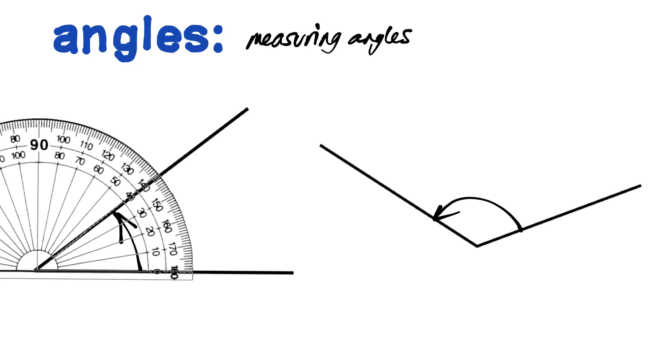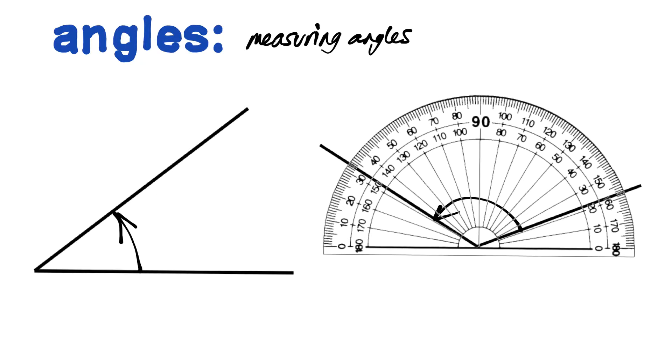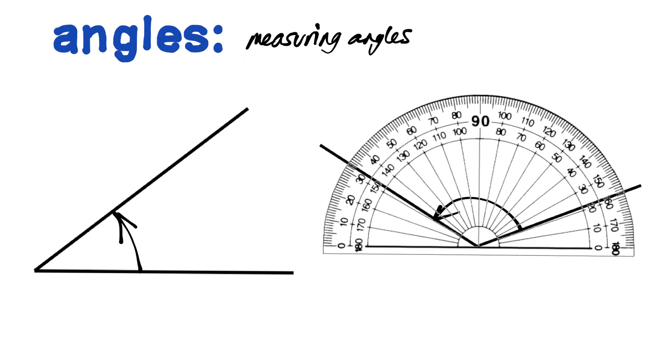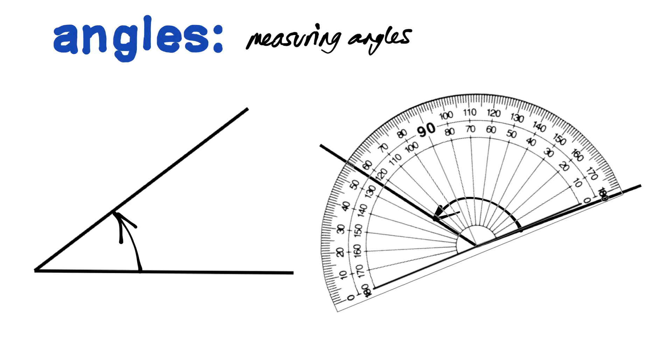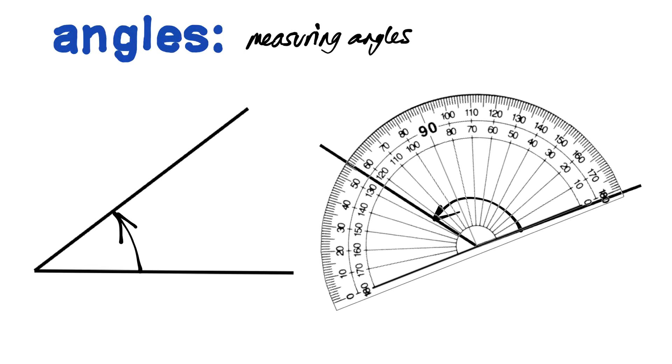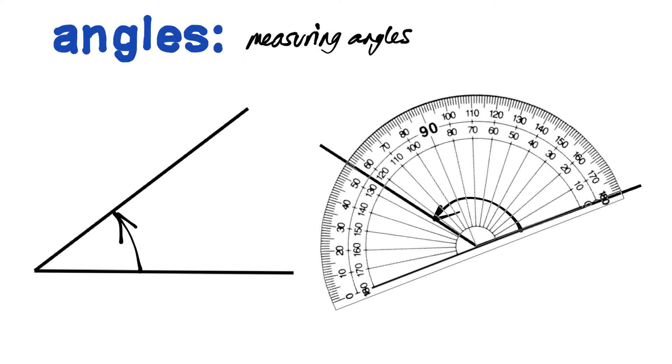In the second one, we do the same thing. We move the crosshair across onto the vertex. We rotate it round so we have that at the crosshair, and we have the baseline on the baseline of the protractor. And then we can see, we measure here. This is greater than 90 degrees. So you've got 10, 20, 30, 90, 100, 110, 120. This is about 124 degrees.